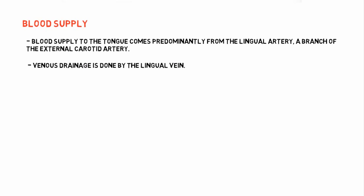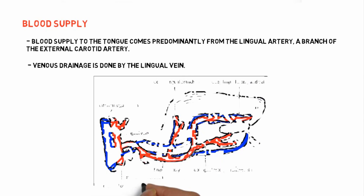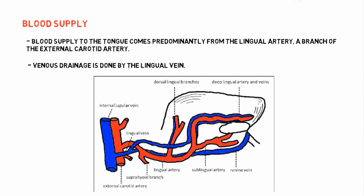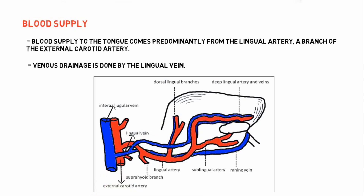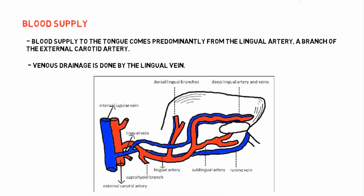Venous drainage is done by the lingual vein. Here is the diagram of the blood supply of the tongue, showing the external carotid artery, internal carotid artery, the lingual vein which is a branch of the internal jugular vein, and the lingual artery which is a branch of the external carotid artery.